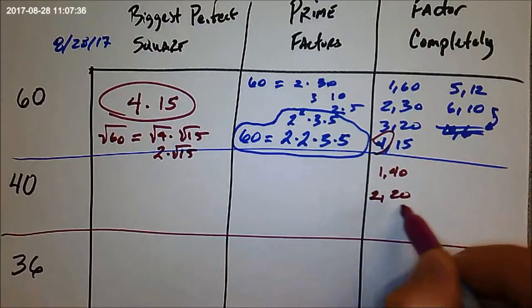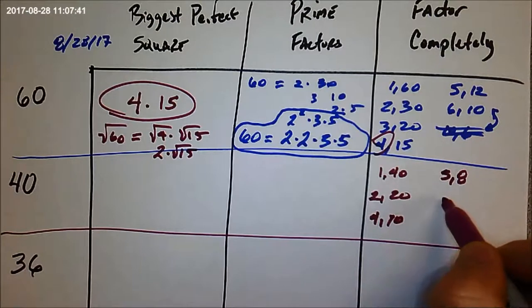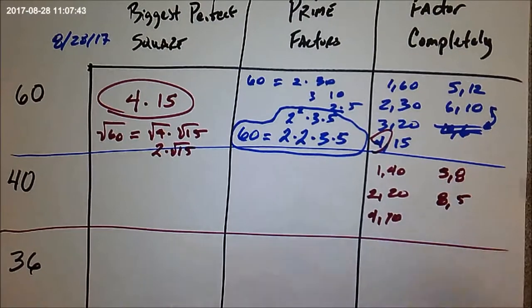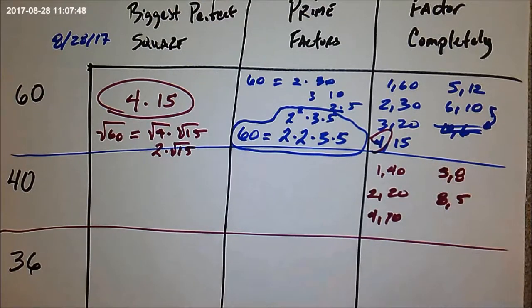40 is 1 times 40, 2 times 20. 3 doesn't go in. 4 does, 10 times. We've got 5 and 8. And the next number would be 8 and 5. Now I didn't say it, but I did check 6 and 7. They don't go in, but there's all of the factors.